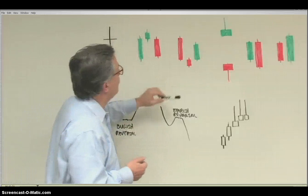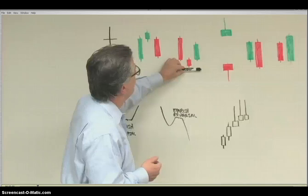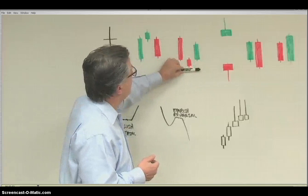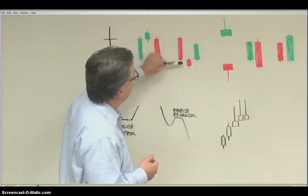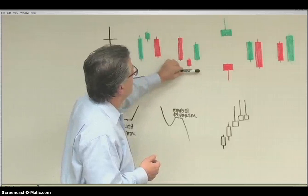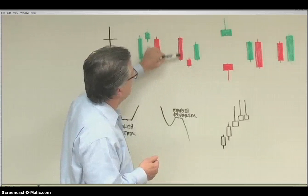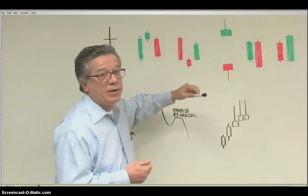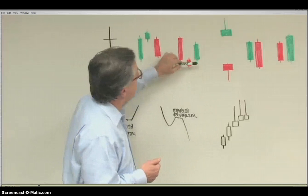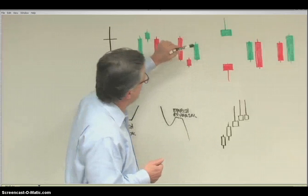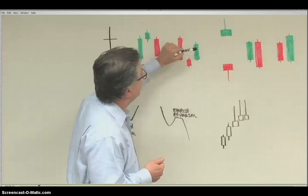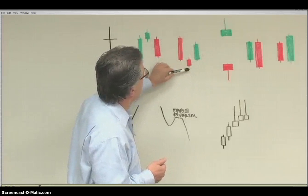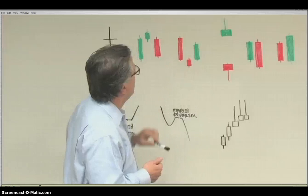The same thing would be true with a level of support — if a morning star pattern is forming around that support level, sellers pushed the price down but weren't able to sustain it, and the pair has now moved to the upside. At the close of that third candle, I'd be able to go long and place my stop right below the lowest point of the pattern.